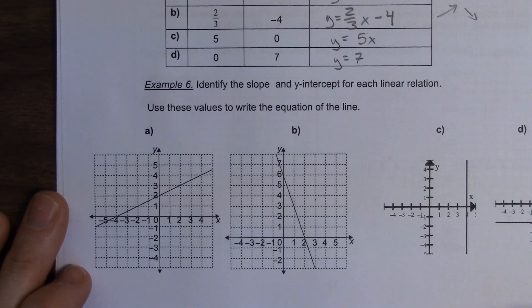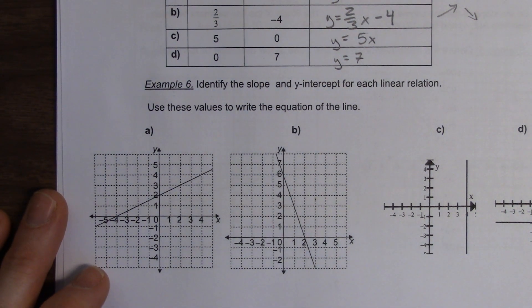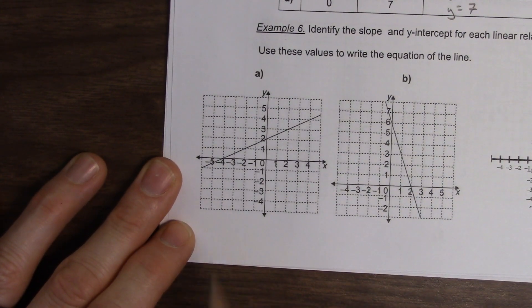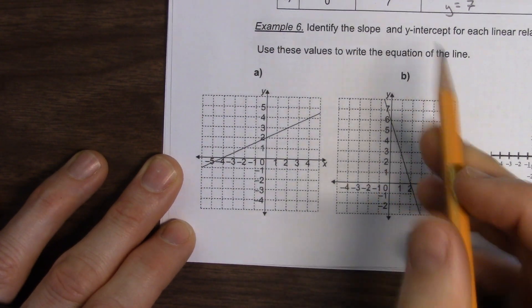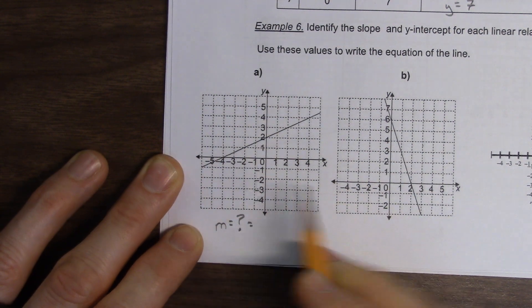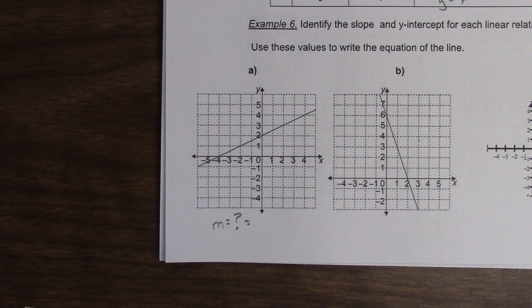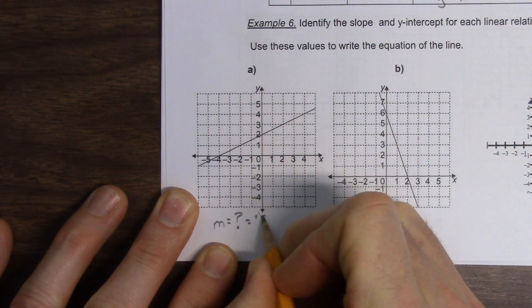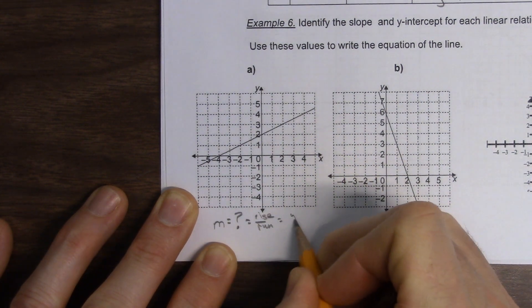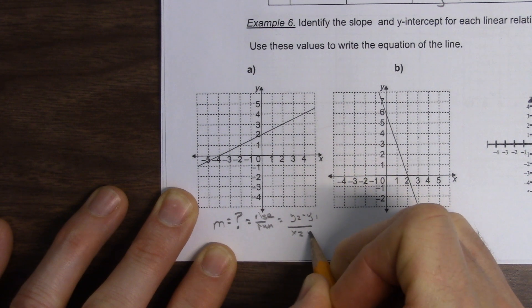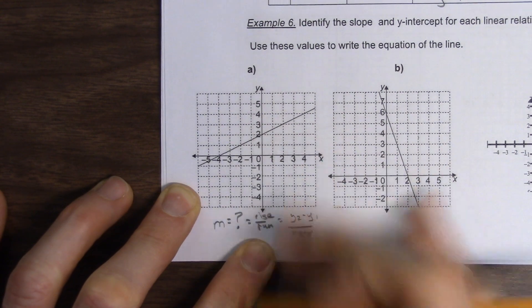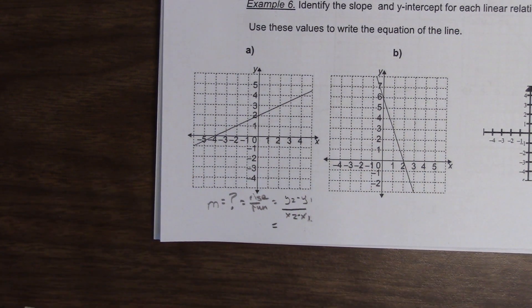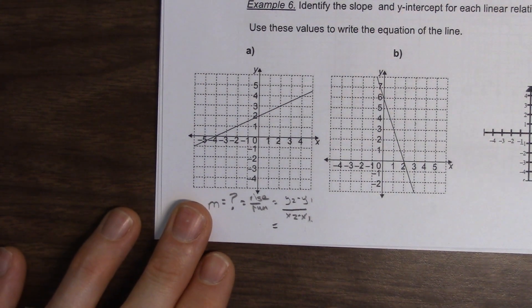Example 6. Identify the slope and Y-intercept for each linear relation. Use these values to write the equation of the line. Okay? Identify the slope and Y-intercept. So, if we have... Let's do the first one. We're going to do it down here. So, we want to do the slope. So, let's find out the slope. What is the slope of this line? How can we figure out the slope of a line? Yeah, Ethan? You could use it by using the equation. Yep. So, what's the equation? You can pick any two points. Yeah.